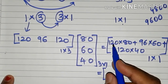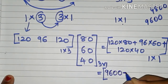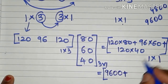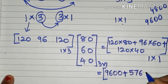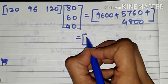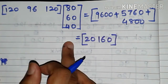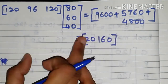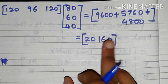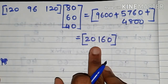This equals 120 times 80, which is 9,600, plus 96 times 60, which is 5,760, plus 120 times 40, which is 4,800. Adding all these together gives 20,160 on the right hand side. This is the total amount of money we will get by selling all the books.